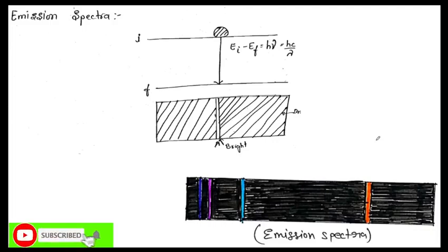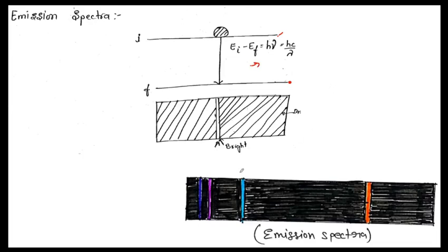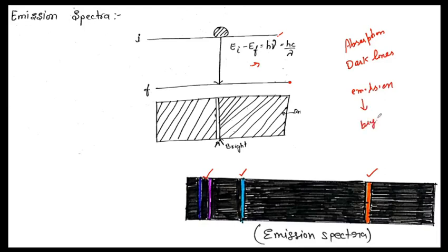In emission spectra, when the atom or electron which is in a high energy state loses some of its energy in the form of a photon and returns to the ground state, the corresponding wavelength change is represented by bright lines. So, absorption spectra appear as dark lines while emission spectra appear as bright lines, showing which particular wavelengths of light have been emitted when an electron transitions from a higher energy state to a lower one.